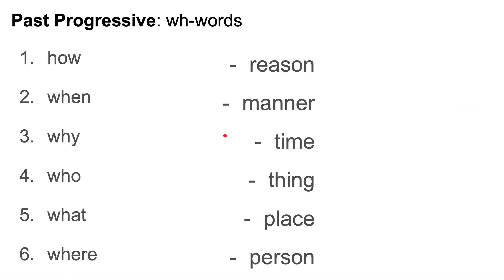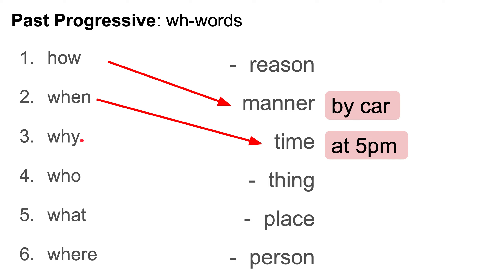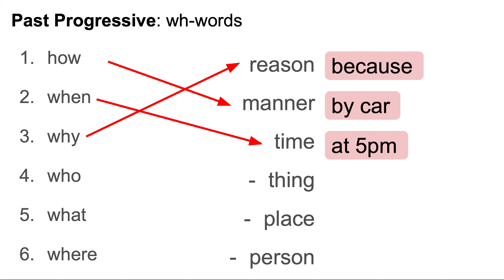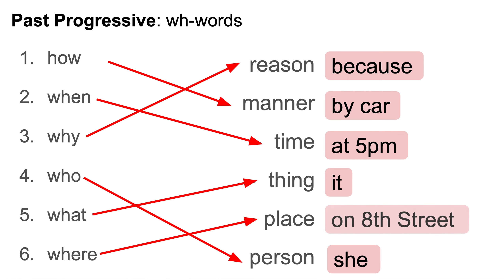Now let's look at WH questions. We have six WH words and they request information. We use 'how' for manner: how were you getting home yesterday? By car. We use 'when' for time: when were you studying? At 5 p.m. We use 'why' for reason: why were you studying? Because. We use 'who' for person: who was studying? She was studying. We use 'what' for things: what were you studying? I was studying it. And we use 'where' for places: where were you studying? I was studying on 8th place.